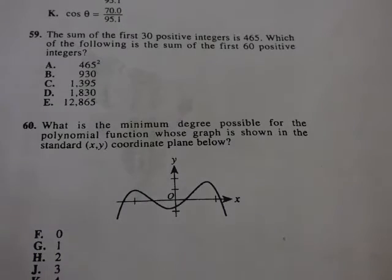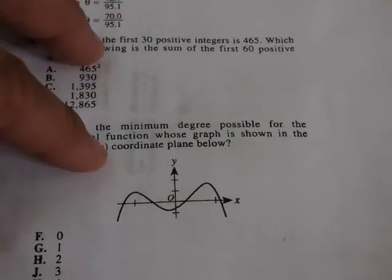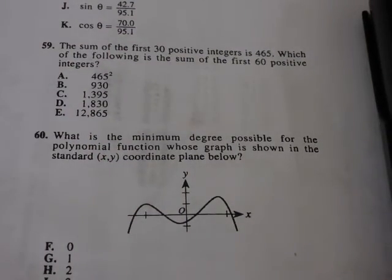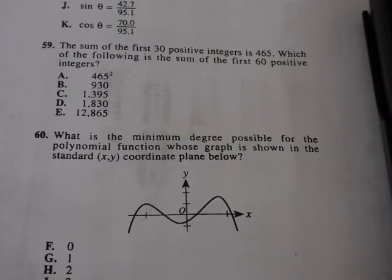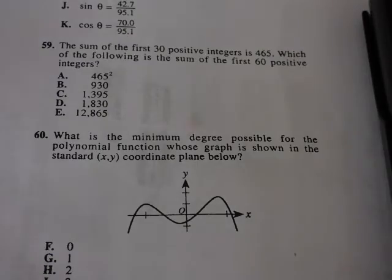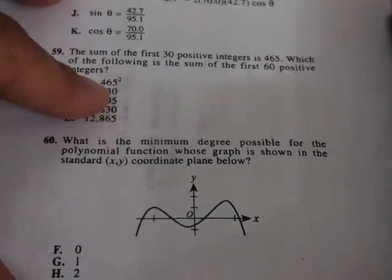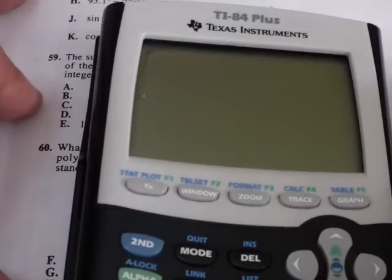What I have here is an old ACT exam. The question I'm looking at is number 59. It says, the sum of the first 30 positive integers is 465. Which of the following is the sum of the first 60 positive integers? So this is an arithmetic sequence, or actually an arithmetic series, because we're looking at consecutive positive integers and we want to know the sum of the first 60. If you know the formulas for this, it's pretty straightforward. But a lot of students don't remember the formula for series, arithmetic or geometric series.